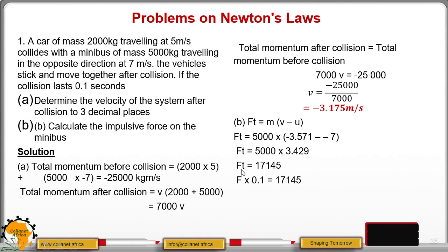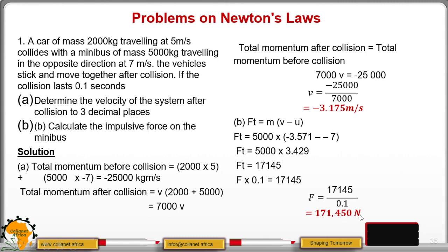That is the impulse. Now to get the impulsive force, we know that impulse is F times T, and T is given as 0.1 seconds. Therefore, our impulsive force will be the impulse divided by time, which is 0.1, and when you divide, it becomes 171,450 newtons. That is the impulsive force.